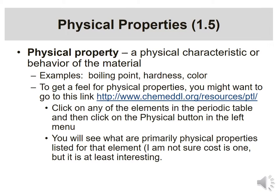Periodic Table Live will allow you to play around with different types of elements. If you click on any element in that big periodic table and then click on the physical button in the left menu, you'll see a whole assortment of physical properties. I'll note that cost is probably not a physical property, but it's kind of interesting to look at. It shows conductivity, boiling points, melting points, densities — all these types of things.